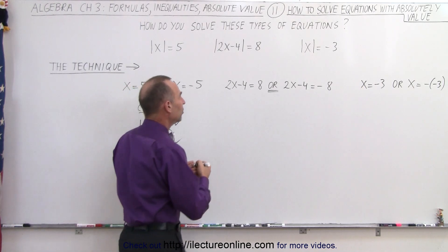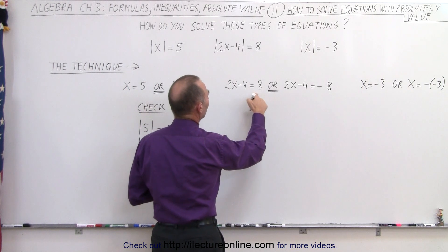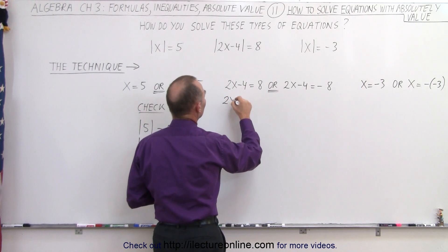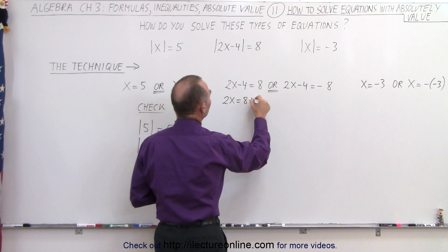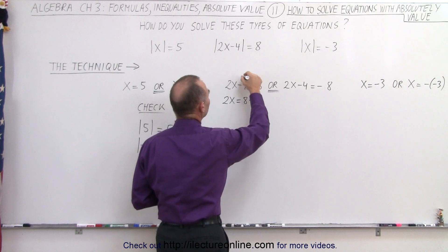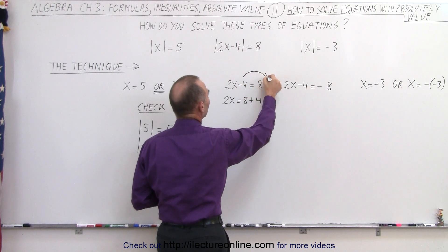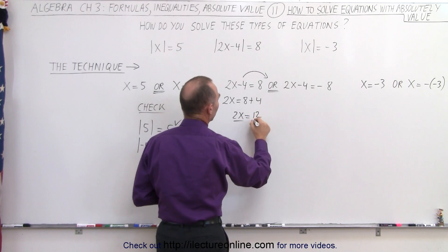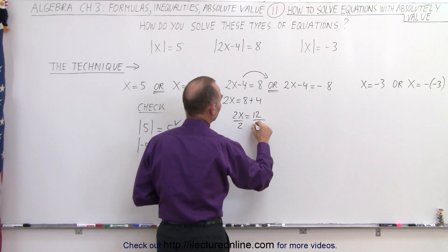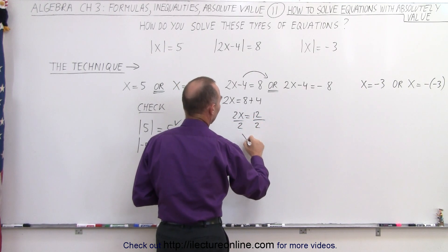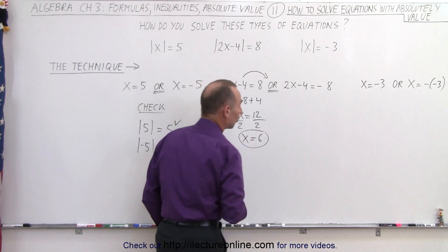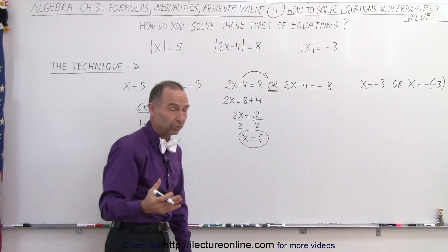Let's go ahead and do that. We have 2x minus 4 equals 8. That becomes 2x equals 8 plus 4 — when I bring the negative 4 over to the other side, it becomes a plus 4. So 2x equals 12. Divide both sides by 2, we get x is equal to 6. That's one of the possible solutions.